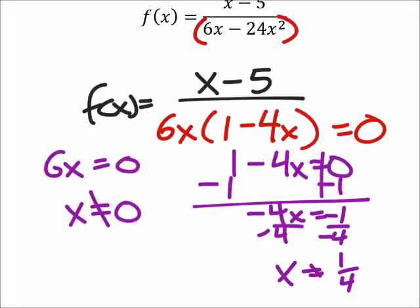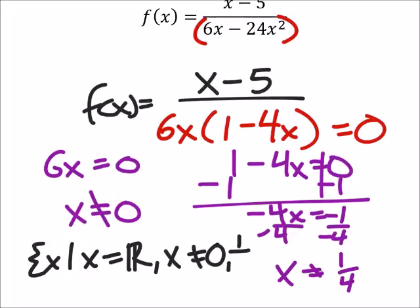And yes, they want this in set builder notation x such that x is all real numbers, but also that x cannot equal 0 or 1 fourth.